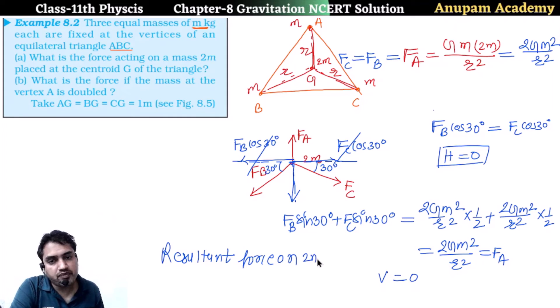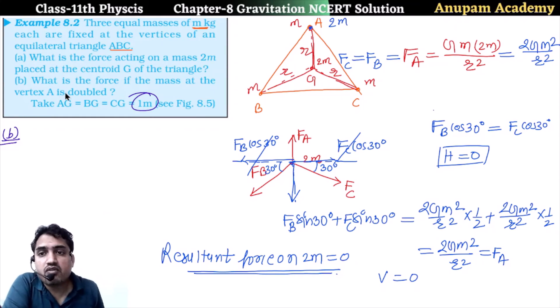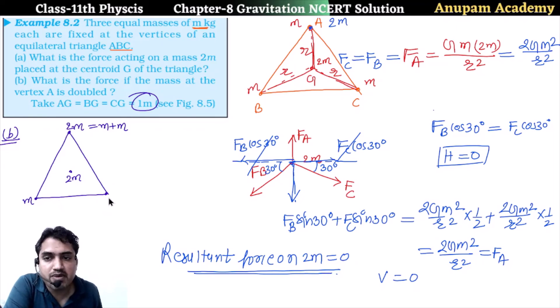If we talk about part B, then in part B given is what is the force if the mass at vertex A is doubled? When we have M, M, M, then the net force is 0 because of symmetry. But now we have M, M, 2M. Here we have a mass M and here M and here we have 2M.